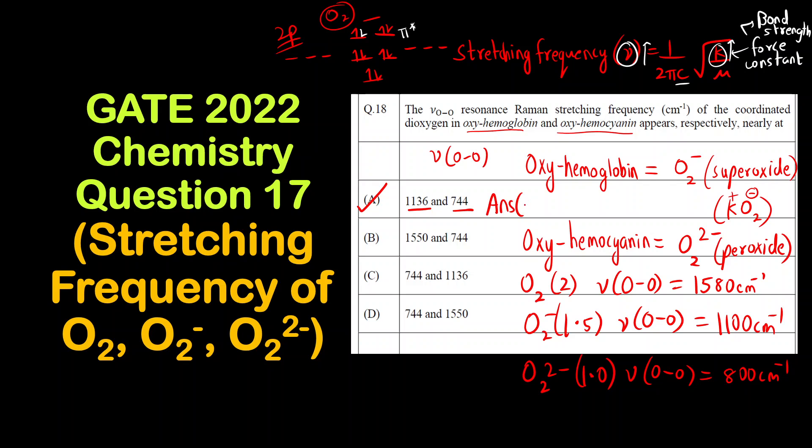This is a memory-based question. If you know the values you can solve; if you don't know, then it is better to leave this question, as it is only for one mark. If you mark the incorrect answer you will get a negative mark of 0.33. The correct answer is option A.